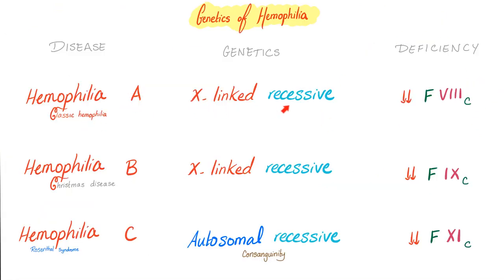Hemophilia A, or classic hemophilia, is X-linked recessive. The problem is with factor VIII activity — it could be a deficiency of the factor or an inhibitor against it. How do we tell the difference? A mixing study. Hemophilia B, or Christmas disease, is also X-linked recessive with a problem with factor IX — deficiency or inhibitor, differentiated by a mixing study. Hemophilia C, or Rosenthal syndrome, is autosomal recessive — remember consanguinity — with a problem in factor XI. Differentiate deficiency from inhibitor by mixing the patient's blood with normal plasma.